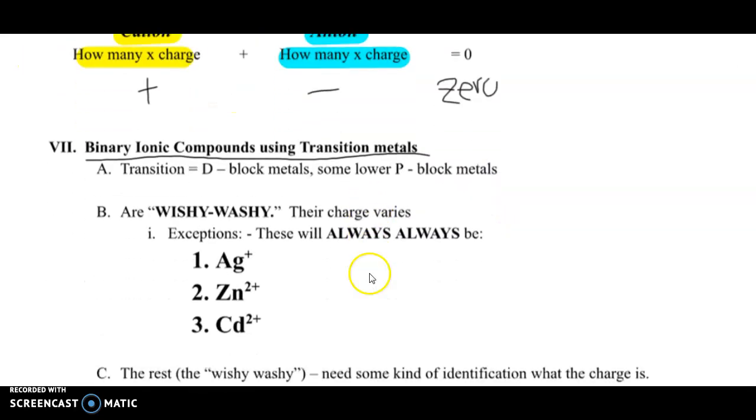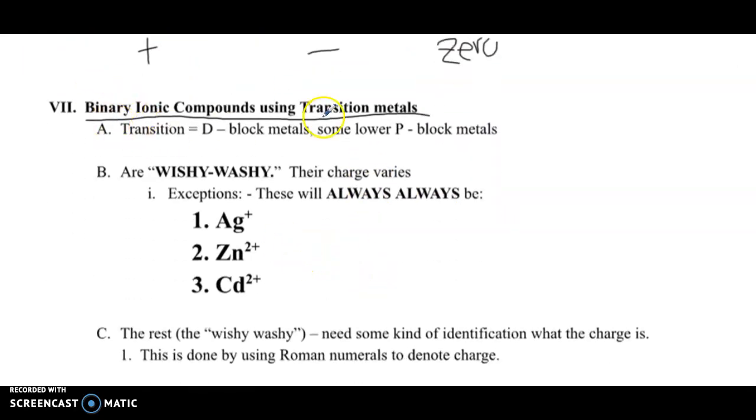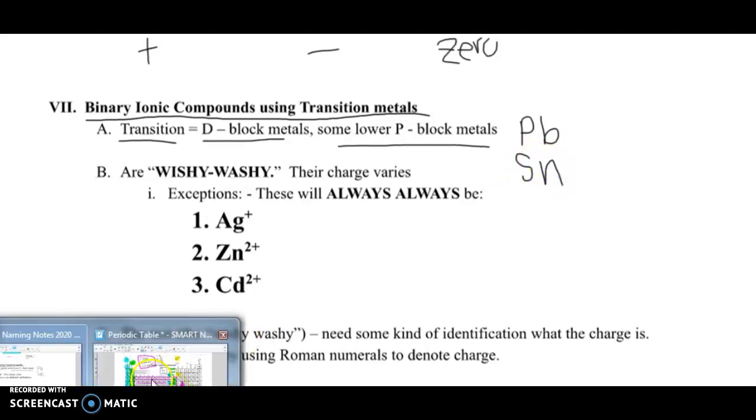And then we look at the anion, and we see how many negative anions there are times the charge, and we get the total negative charge, so we add those up, and then they should always equal out to zero. So let's look at some examples.